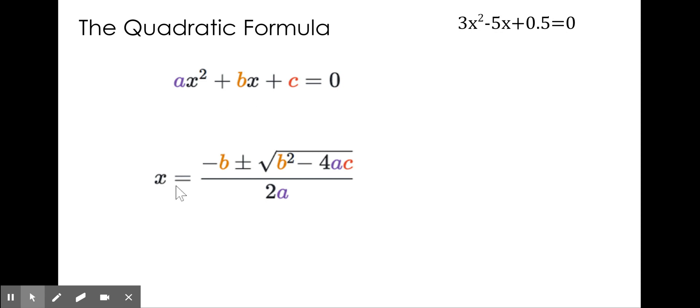This is the quadratic formula: x is equal to negative b plus or minus the square root of the quantity b squared minus 4 times a times c, all divided by 2a. And again, to use the quadratic formula, all you need to do is determine your a, b, and c values and plug them into the formula.